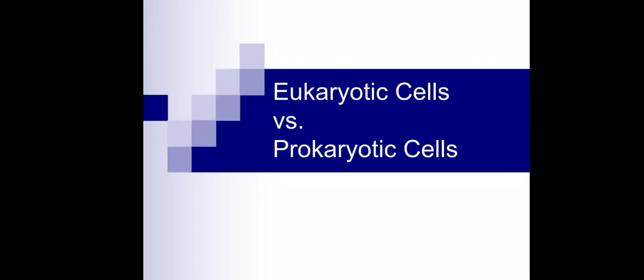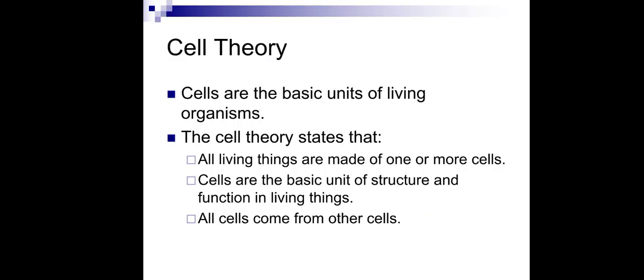Today we'll learn about eukaryotic cells and prokaryotic cells. Before going to that, let's discuss what is cell theory. The cell theory states that all living things are made up of one or more cells. Living things can be single cellular like amoeba, or multicellular like us, or any kind of plant or other higher organisms. Cells are the basic unit of structure and function in living things.